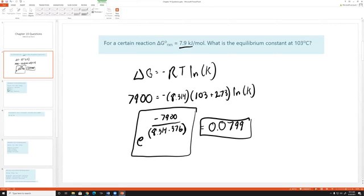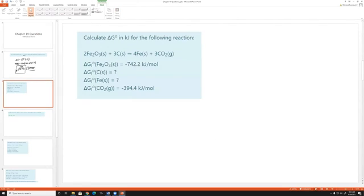Okay, moving on to the next one. Calculate delta G for the following reaction. Now with delta G, with delta S, and with delta H, so that's Gibbs free energy, entropy, and enthalpy. If we have a reaction, we can simply find the enthalpy or entropy or Gibbs of the entire reaction by doing the products minus the reactants.